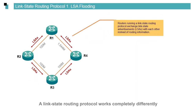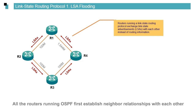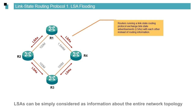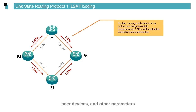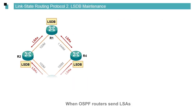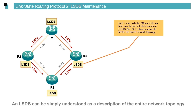A link state routing protocol works completely differently. All the routers running OSPF first establish neighbor relationships with each other, and subsequent OSPF operations are performed based on these neighbor relationships. Next, the OSPF routers will flood link state advertisements, LSAs. LSAs can be simply considered as information about the entire network topology, such as costs of directly connected interfaces, network segments, peer devices, and other parameters. These parameters help the routers understand the entire network topology. When OSPF routers send LSAs, they also collect LSAs and store them in link state databases, LSDBs.